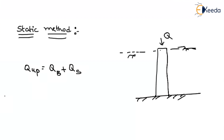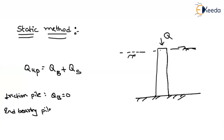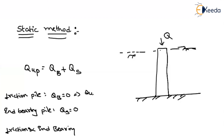If it is a friction pile, then the end bearing capacity will be equal to zero. If it is an end bearing pile, the frictional capacity will be equal to zero. If it is an end bearing pile, the ultimate bearing capacity is QB. If it is a friction-cum-end bearing pile, the ultimate carrying capacity equals QS plus QB.